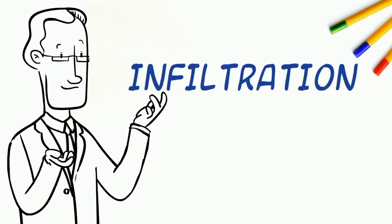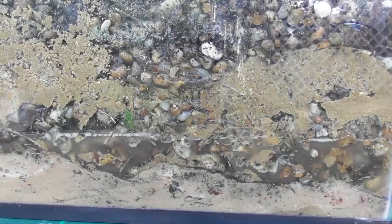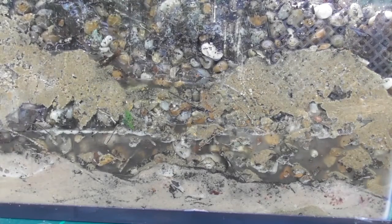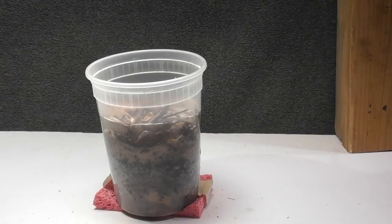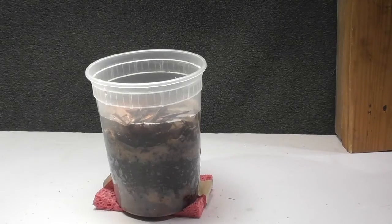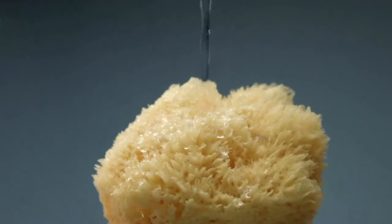Infiltration is when water moves down through rocks and sand. You can see the water infiltrate through these rocks. This water that moves into the ground is called groundwater. Much of this groundwater will move into an aquifer, represented by the sponge. Think of an aquifer as a huge sponge made of rocks. Some aquifers, like the one in Florida, are as large as the entire state.